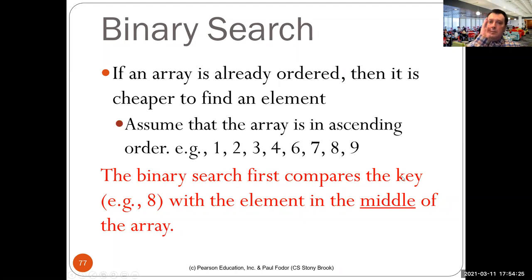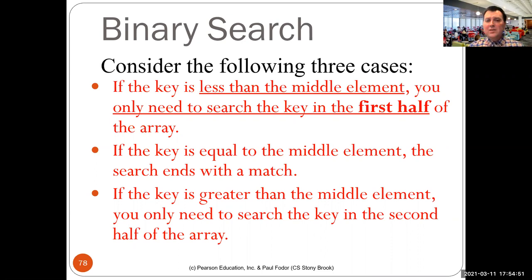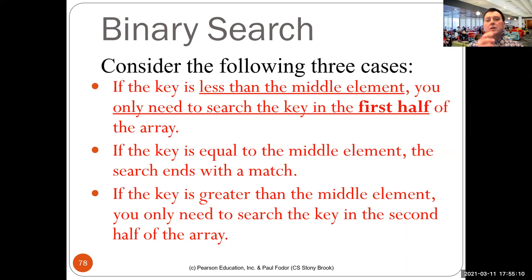Binary search compares the key with the element in the middle — like opening the book in the middle. There are three possible cases. If the key is less than the middle element, you discard the second half and repeat the algorithm for the first half — discarding half the elements at once. If the key equals the middle element, you return the index. If the key is greater than the middle element, you discard the first half and search only the second half, repeating the process.